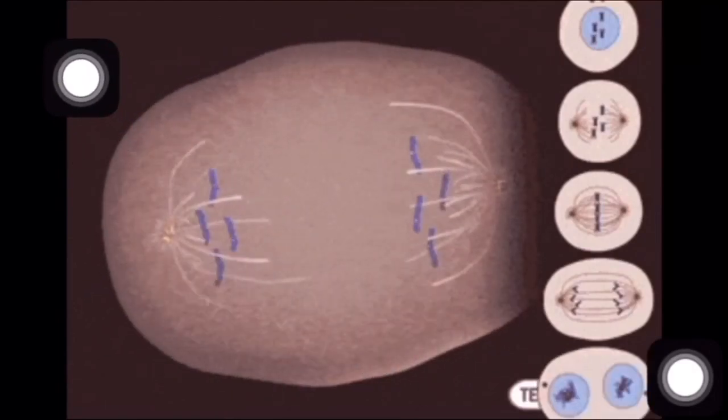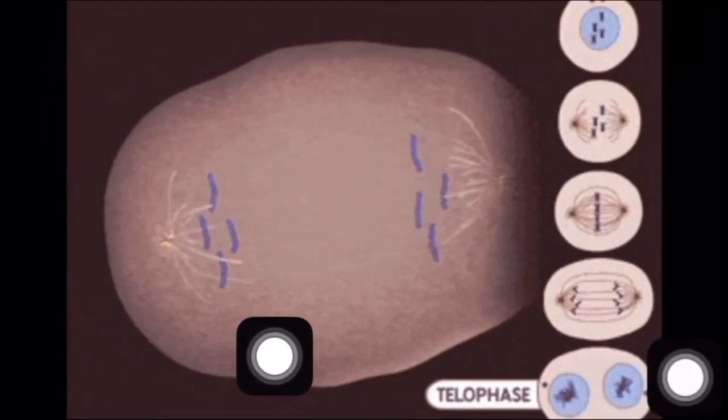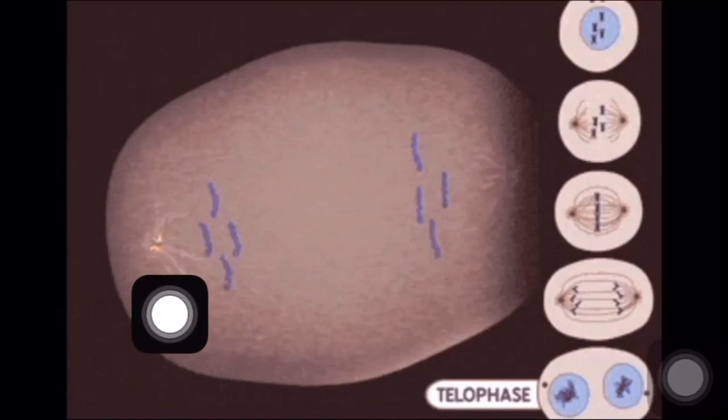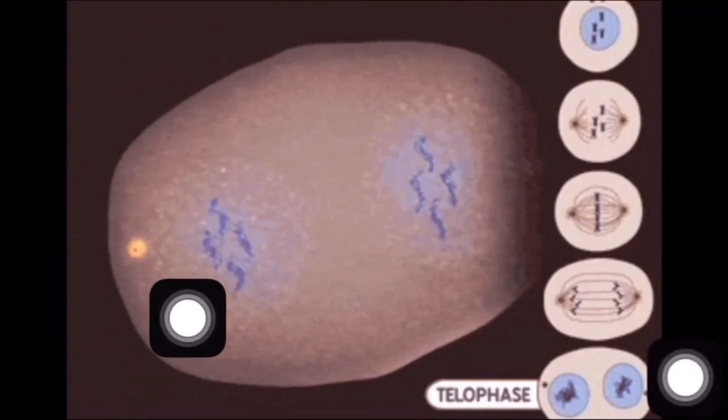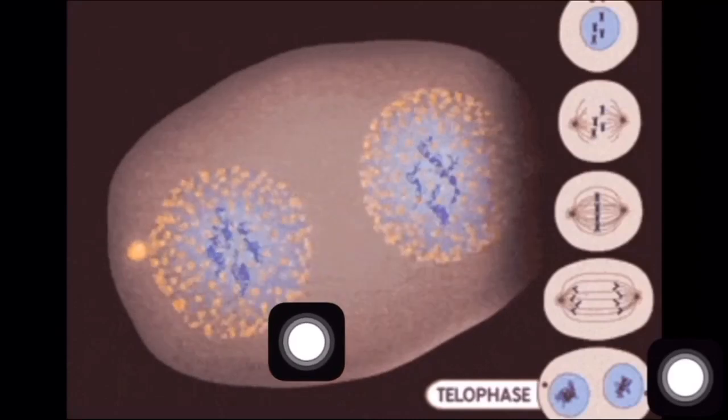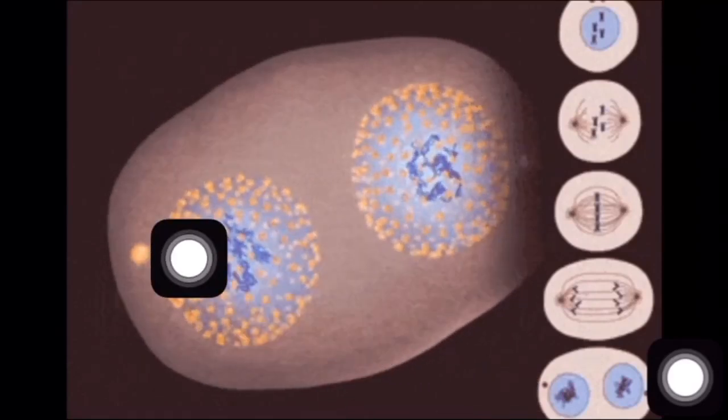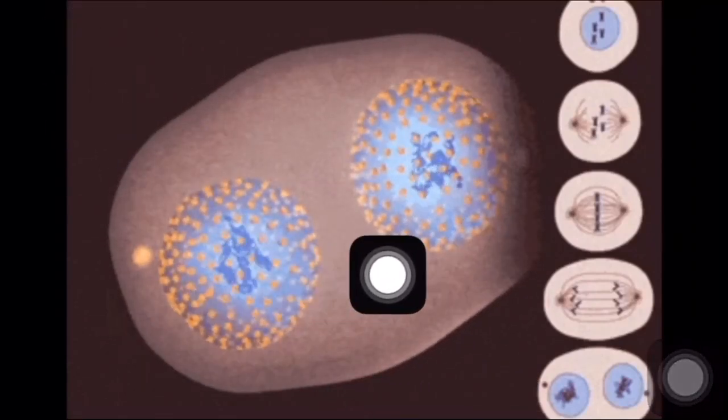And the last stage is telophase. In this case, the nucleus is split completely and the two nucleus - two nuclei - are formed. T for two you can say, telophase T for two. In this way, the karyokinesis completes and the two identical nuclei are formed.